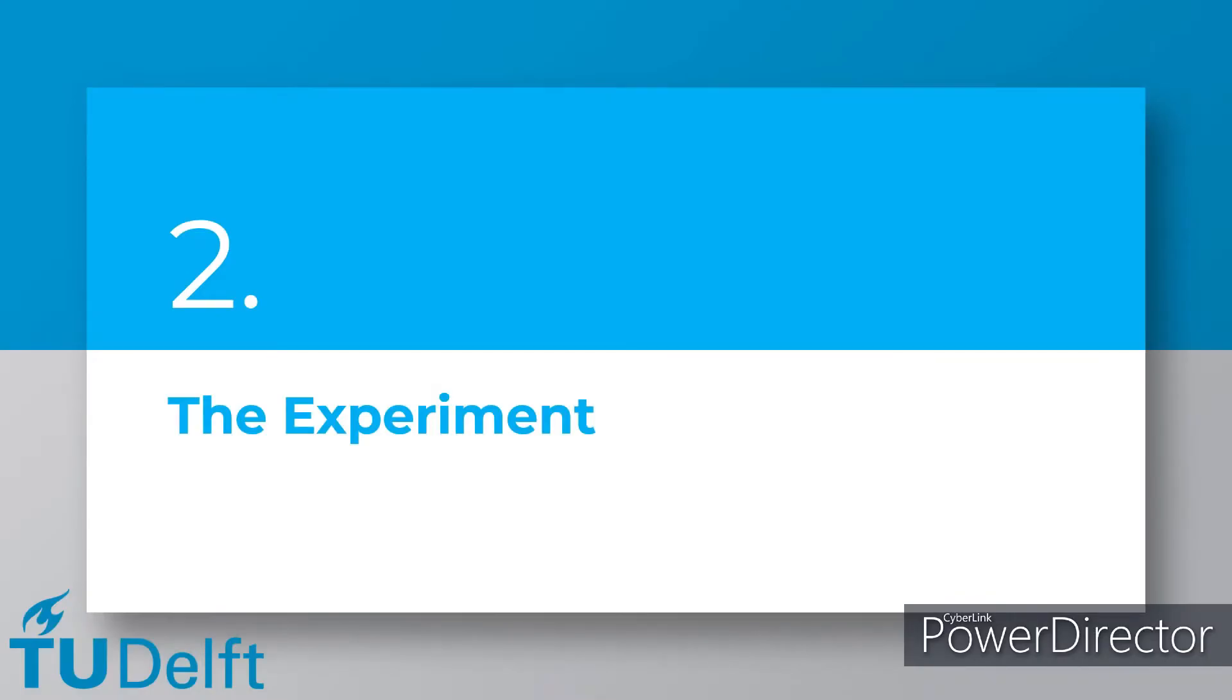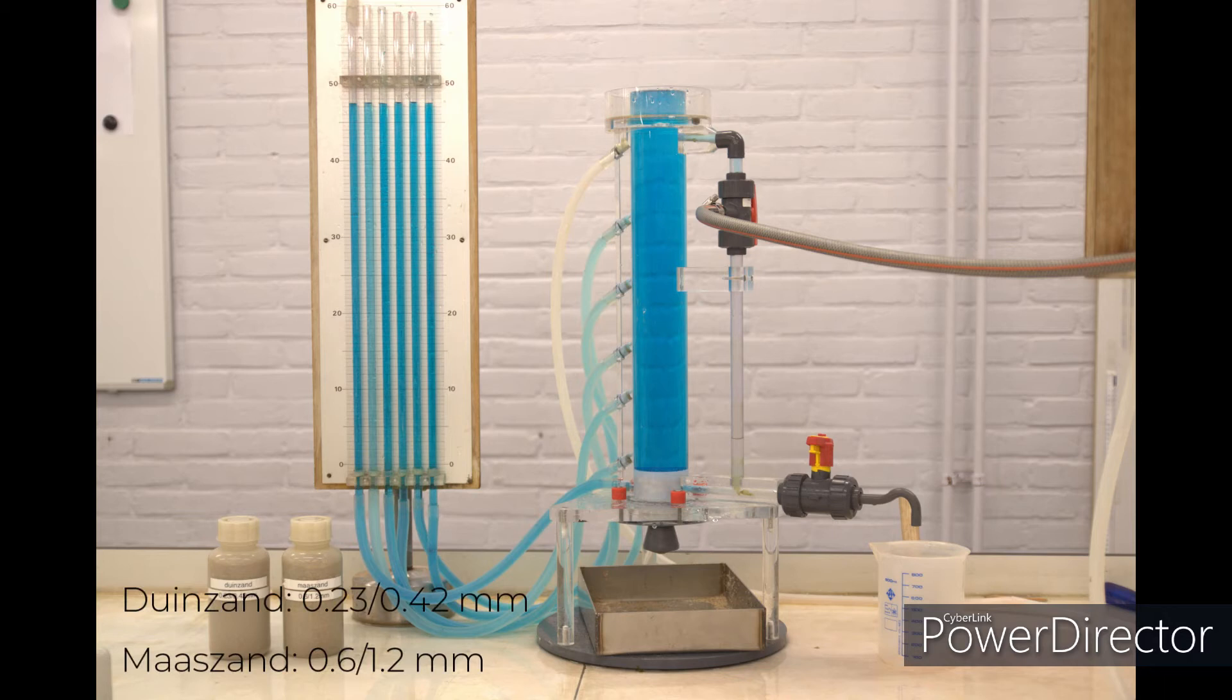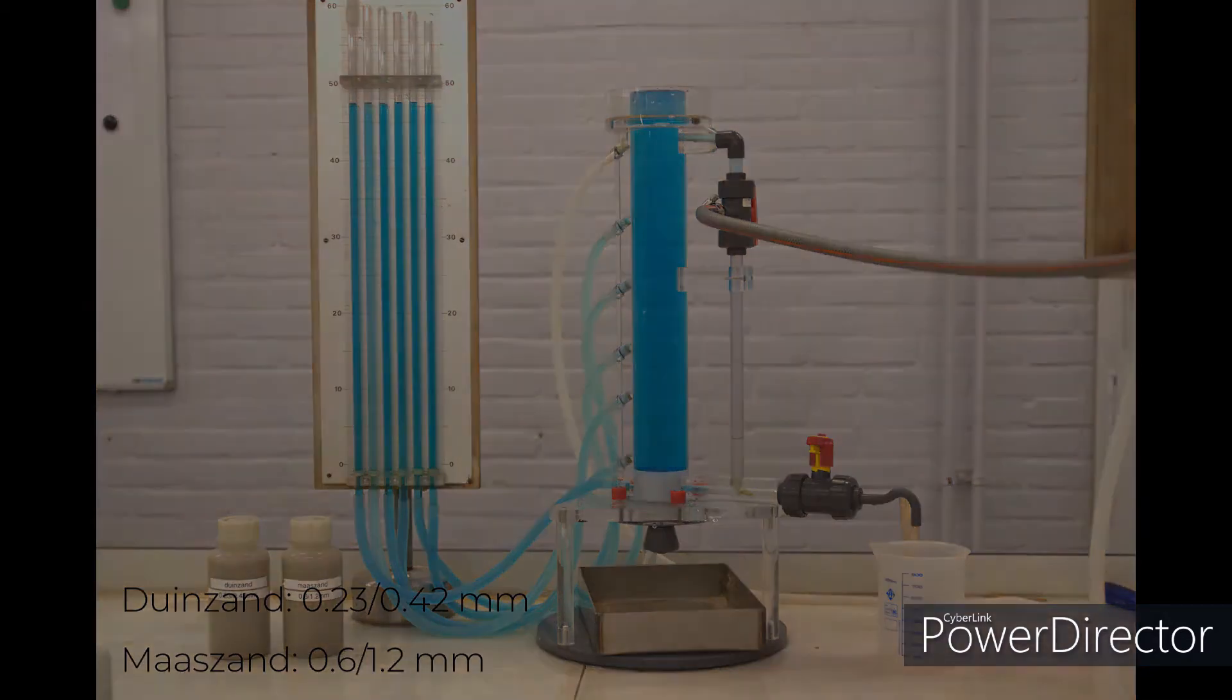After we have established the basics behind the permeability test, we can take a look at the different steps to be conducted in the practical. This image shows the Darcy setup as used in our experiment at the GeoLab at Delft University of Technology. Compare this figure with the figure shown early in this video showing the schematic of the Darcy setup and see whether you recognize all the components. Blue dye is added to the water used in this experiment for the benefit of visibility, and the used sand samples are shown in the bottom left in the figure. The properties are shown on the labels.